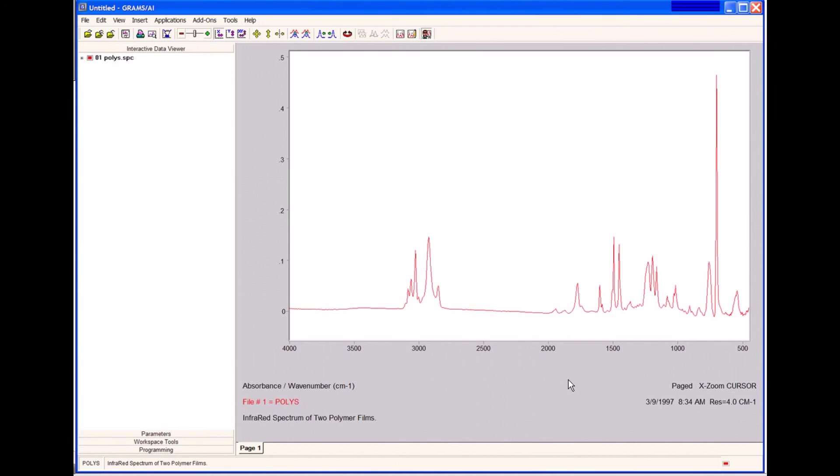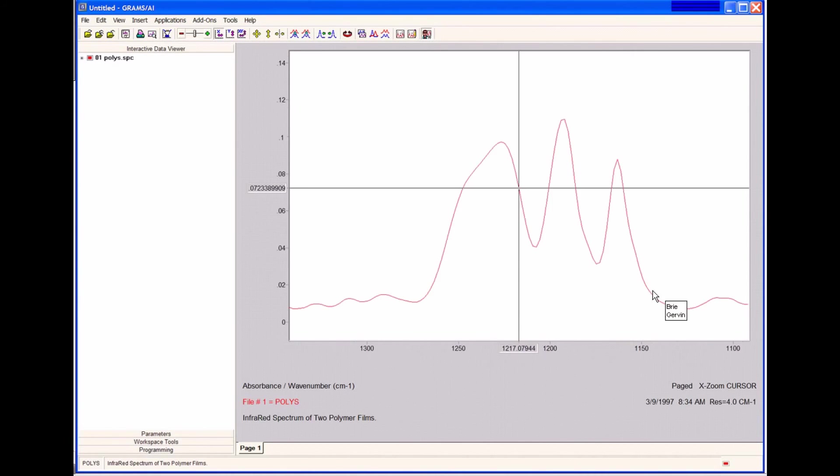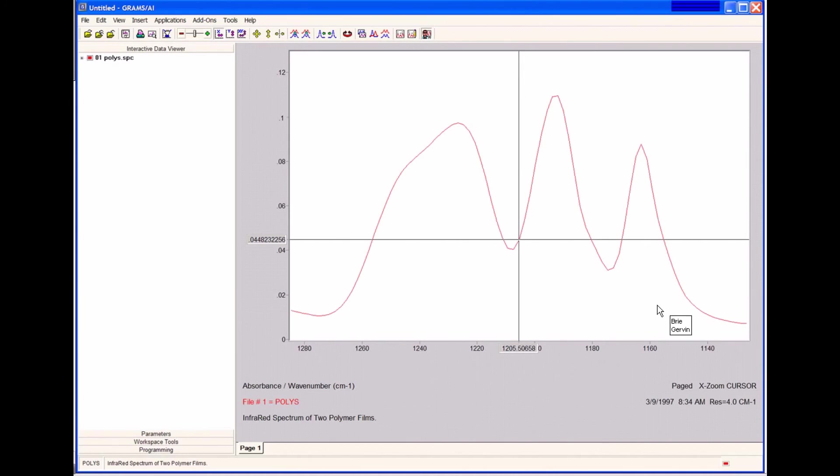To do this, we're going to start with our infrared spectrum that we have loaded into Grams AI. We can zoom in onto the set of peaks that we want to fit, and we can do this right in Grams AI or in peak fitting itself. We're going to zoom in here on this region. As we can see, we have some complex peaks that likely have several single overlapping peaks.